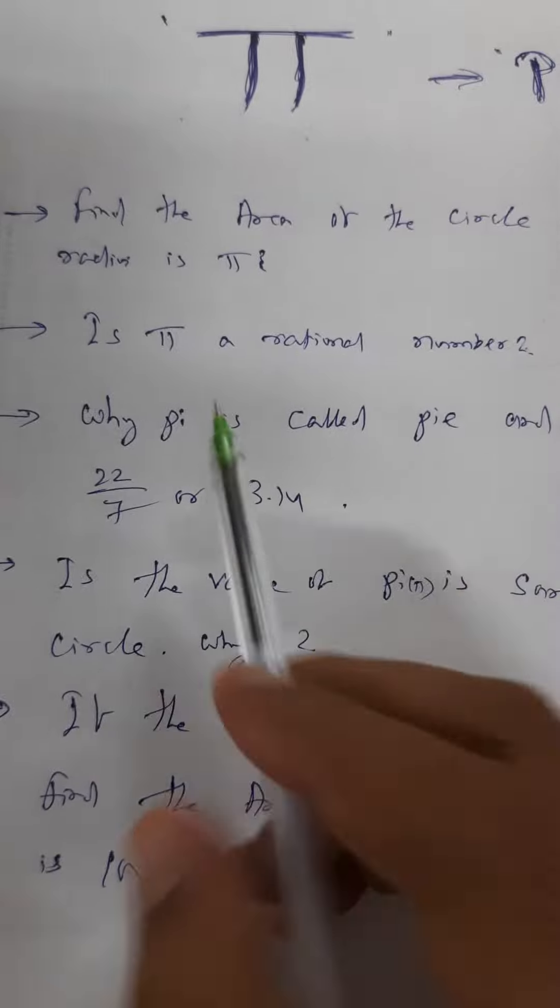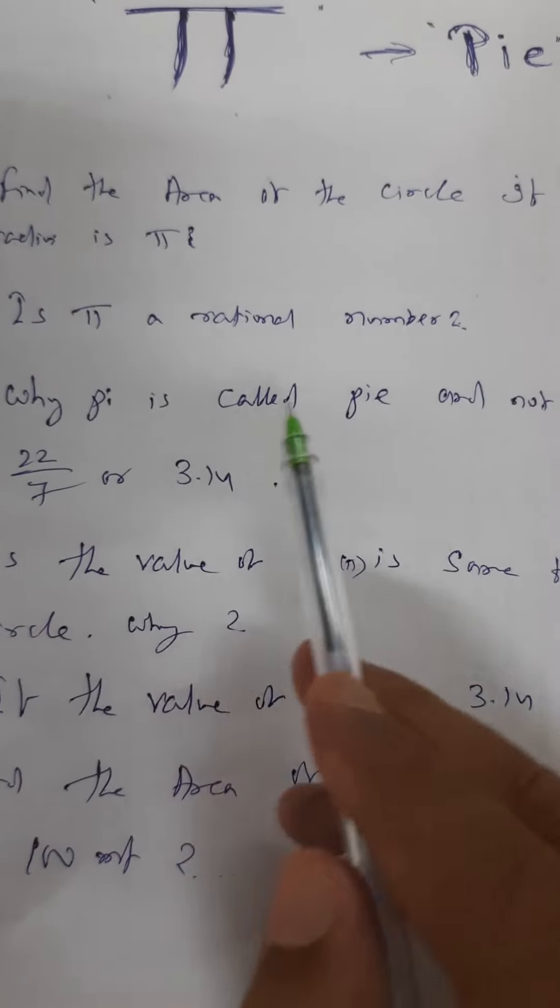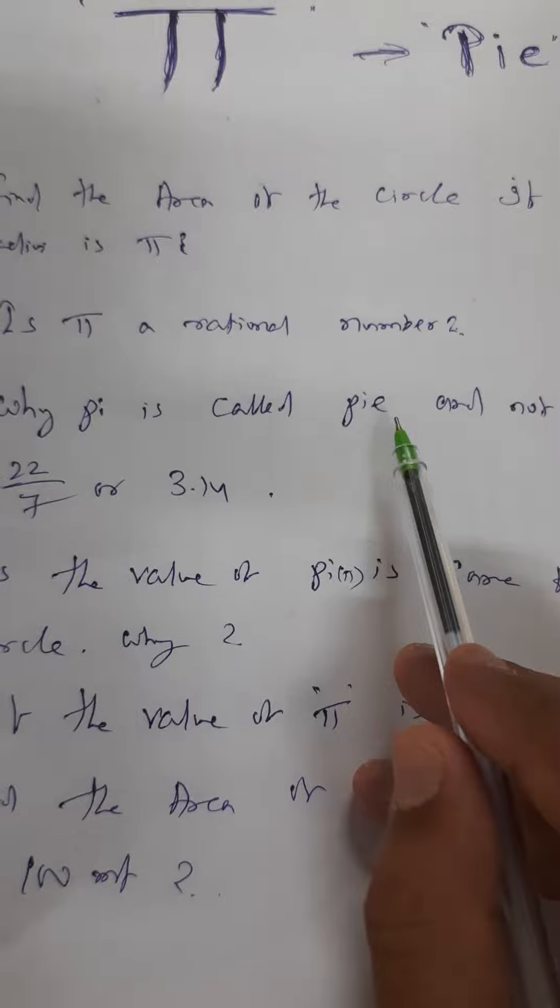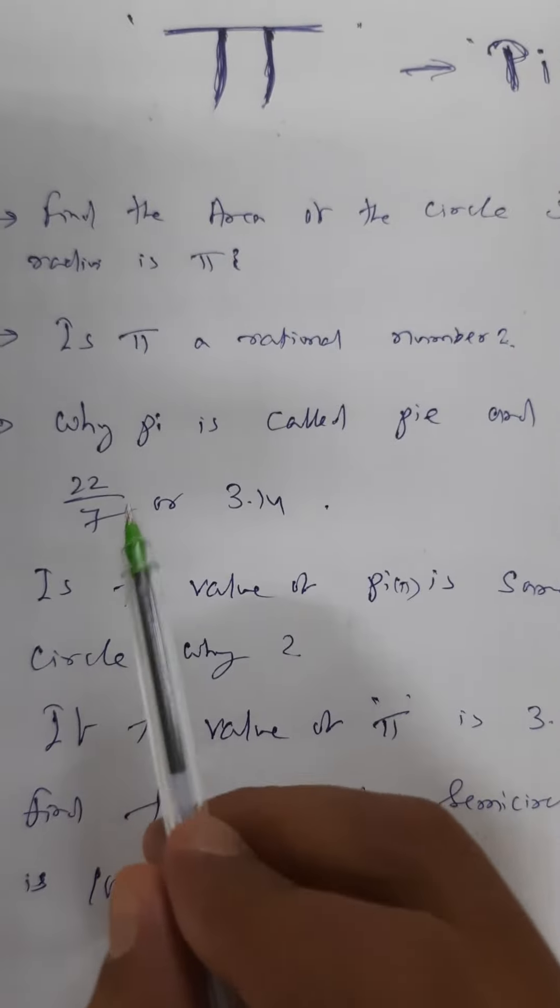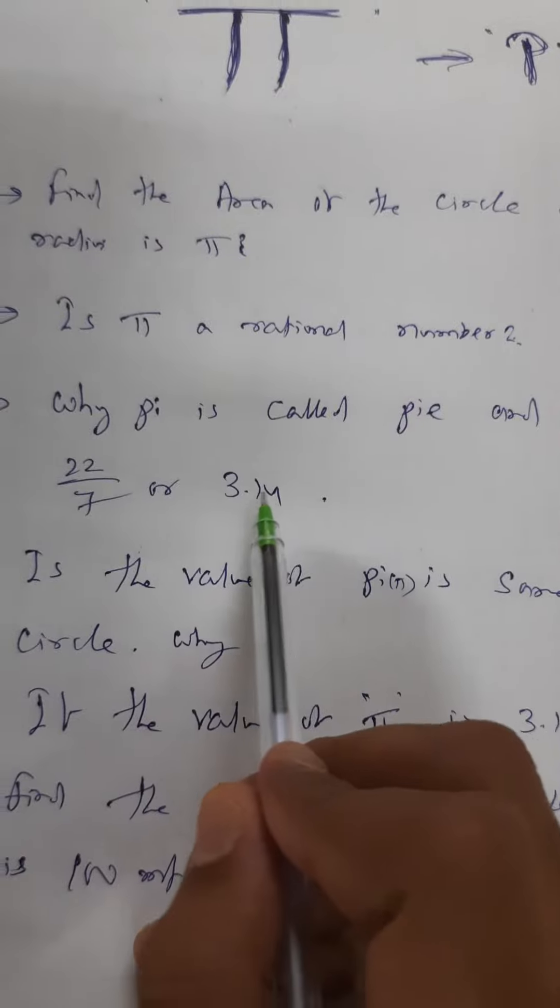And the third one is: why pi is called P-I-E pi and not simply 22 by 7 or 3.14?